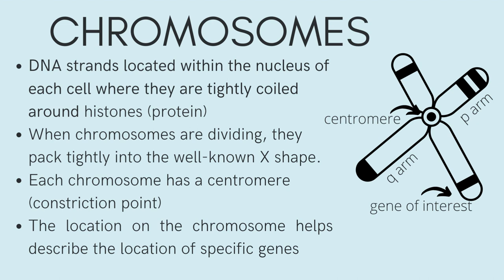Extra chromosomes occur because the division of cells in the parents to create egg and sperm do not divide properly, adding an additional chromosome. Each chromosome has a constriction point called the centromere, which divides the chromosome into two sections, or arms. The short arm of the chromosome is labeled the P-arm, and the long arm is the Q-arm. The location of the centromere on each chromosome gives the chromosome its characteristic shape, and can be used to help describe the location of specific genes.